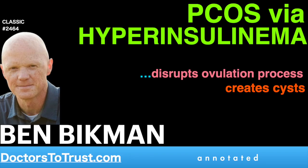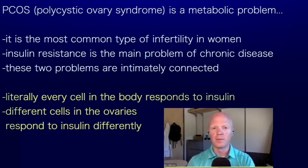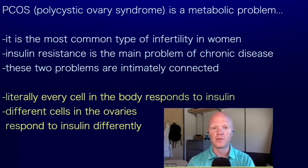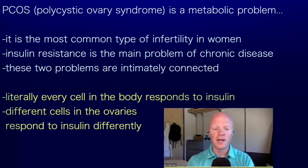Lest the name polycystic ovary syndrome muddy the water, this is a metabolic problem. It is the most common infertility in women, and it's no coincidence that insulin resistance happens to be the single most common problem, full stop. These two are intimately connected, and it's just a further reflection of how relevant insulin is throughout the body. Literally every single cell of the body responds to insulin in some way, and the ovaries are no different.